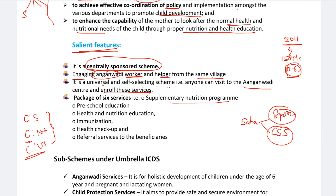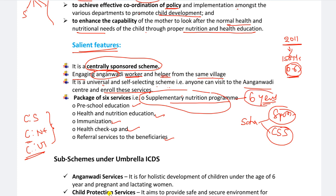Supplementary nutrition program target group evaurante - children below six years, and pregnant and lactating mothers. Anganvadi workers provide these services. Preschool education lo target group evante - three to six years. Anganvadi workers hai ikkada services ni provide chestaru. Next one is immunization - target group: children below six years and pregnant women and lactating mothers. Anganvadi workers provide health services here.